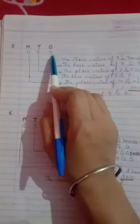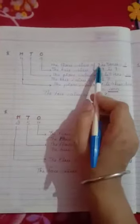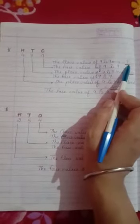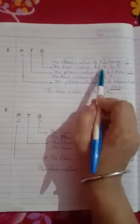Let's take another example: 479. The place value of 9 is 9 (1 one equals 9). The face value of 9 is 9.